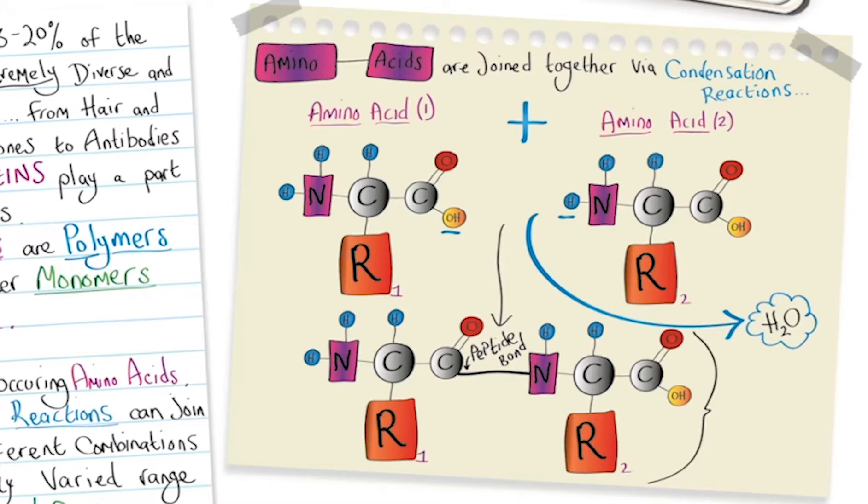So overall, we have this dipeptide. Di meaning 2 because of the 2 amino acids. And peptide is the name of the bond that links them together.